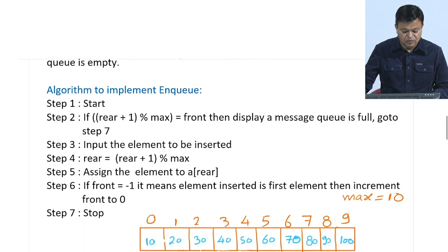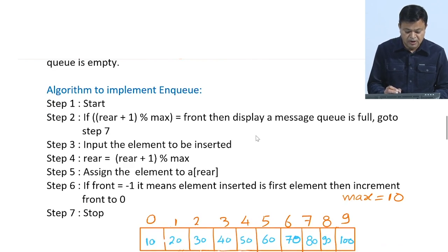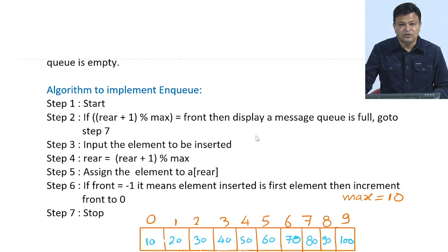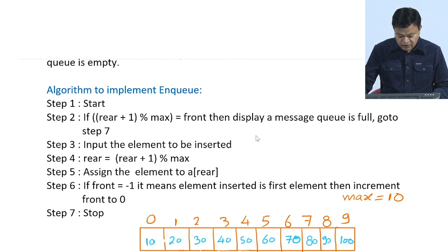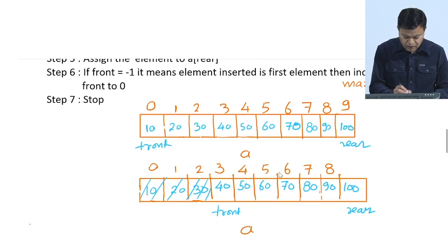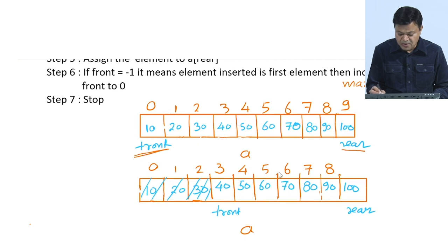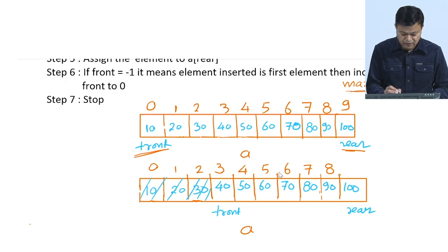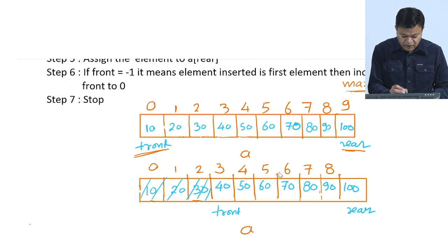Now let us discuss the algorithm to implement enqueue. Step 1 is start. First we handle the extreme condition: queue is full. In example 1, with max equal to 10, indices 0 to 9 hold 10 elements (10, 20, 30, 40, 50 up to 100), so front equals 0 and rear equals 9 — the queue is full.